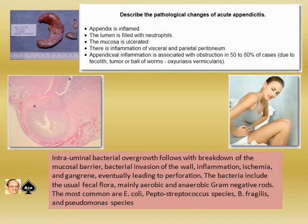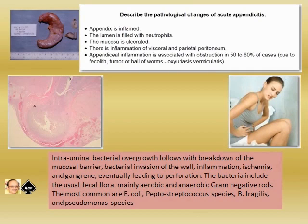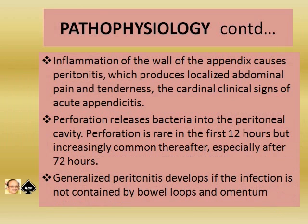Appendiceal inflammation is associated with obstruction in 50 to 80% of cases, due to fecalith, tumor, or a ball of worms such as Oxyuris vermicularis. Intraluminal bacterial overgrowth follows with breakdown of the mucosal barrier, bacterial invasion of the wall, inflammation, ischemia, and gangrene, eventually leading to perforation. Bacteria include the usual fecal flora, mainly aerobic and anaerobic gram-negative rods — most commonly E. coli, Peptostreptococcus species, B. fragilis, and Pseudomonas species. The panel shows a specimen of appendix with cross-sectional H&E staining, and an adolescent girl in the characteristic posture supporting her lower abdomen. Inflammation of the appendix wall causes peritonitis, producing localized abdominal pain and tenderness, the cardinal clinical sign of acute appendicitis.